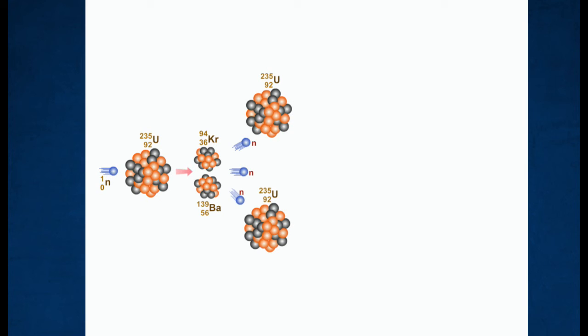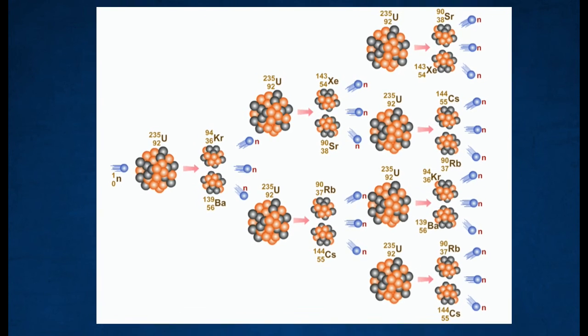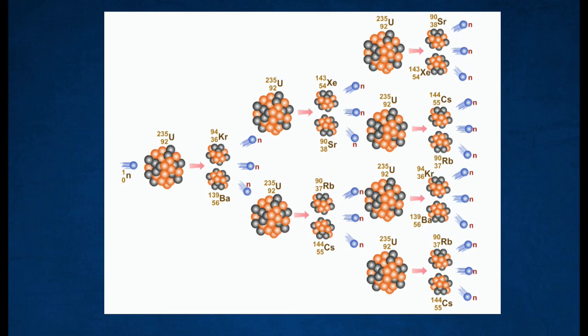These three neutrons may trigger the fission of another uranium-235 nucleus. The chain reaction will keep going as long as enough uranium-235 is available. In this reaction, a huge amount of energy is produced and gives out heat.